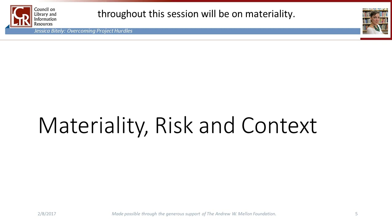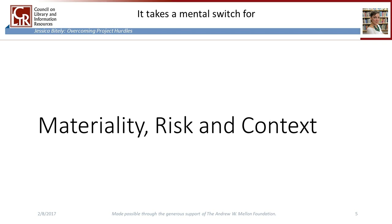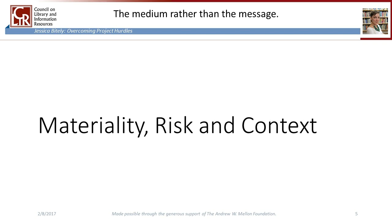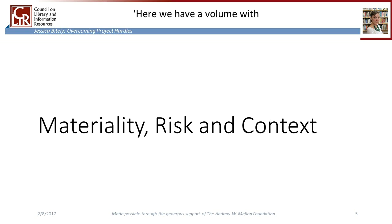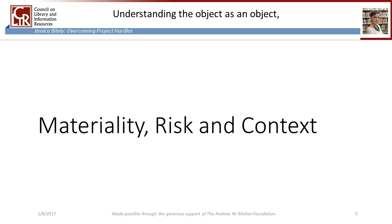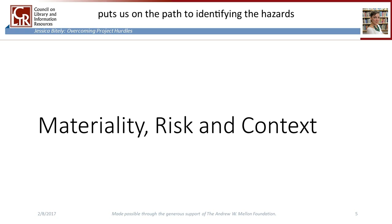My focus throughout this session will be on materiality. We're generally very comfortable thinking about the intellectual content of our collections. It takes a bit of a mental switch for information professionals to look not at what an object means or contains, but at what it is — the medium rather than the message. For example, while you might look at a book and say this is a first edition copy of Alice in Wonderland signed by Lewis Carroll with marginalia in the hand of the original owner, from a materiality perspective we also want to be saying: here we have a volume with a gilt-stamped red cloth cover, a cotton rag text block, and at least three types of ink. Understanding the object as a composite object — often made of multiple materials — puts us on a path to identifying the hazards to that object and also the hazards we might face from that type of object.